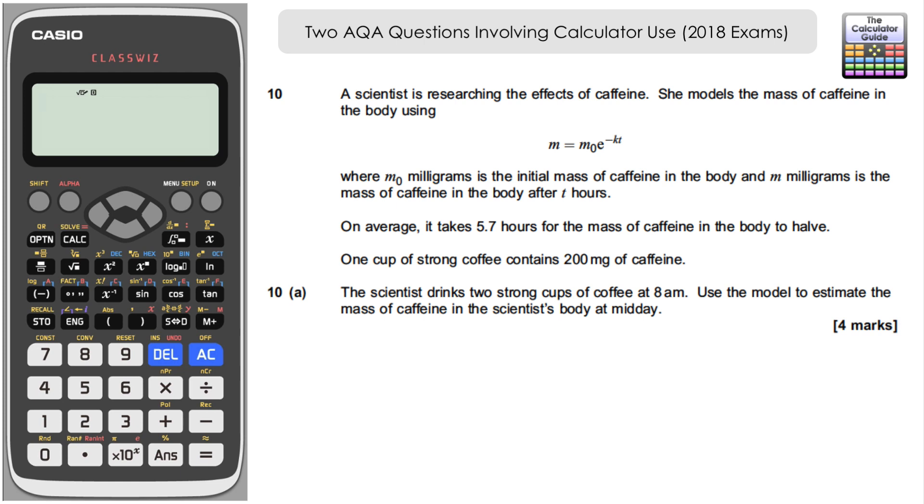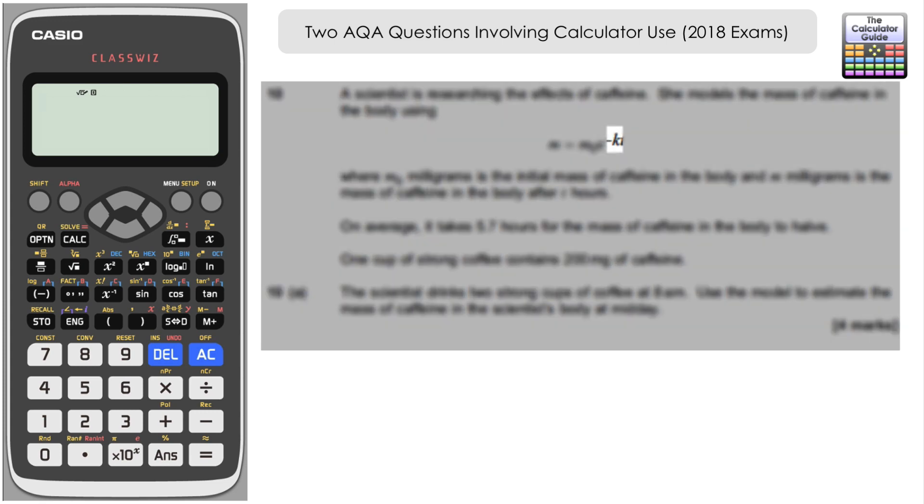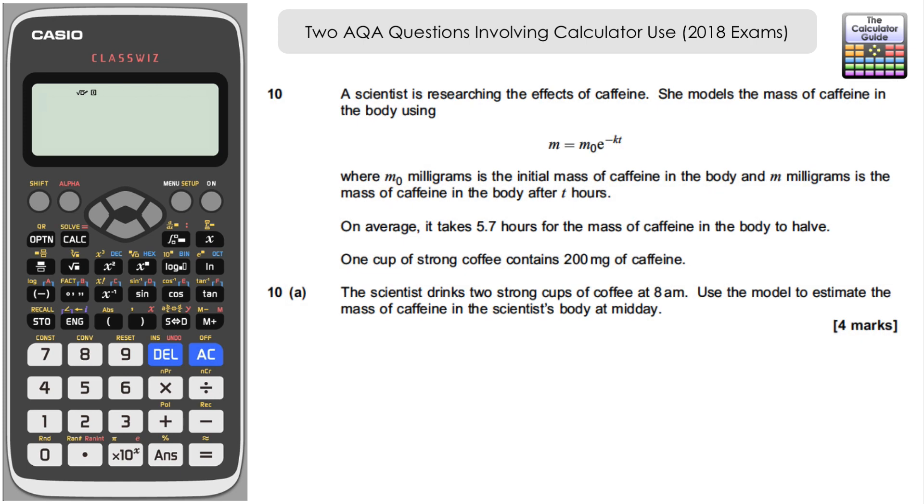So part A, the scientist drinks two strong cups of coffee at 8am. Use the model to estimate the mass of caffeine in the scientist's body at midday. Before we can actually answer the question, we need to work out this unknown constant k which would represent some sort of rate of decay of the caffeine in the body. We've got enough information from the question to be able to find out what k is and we're going to let the calculator solve that for us.